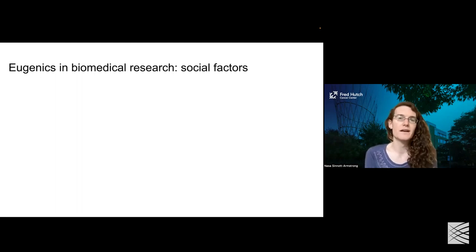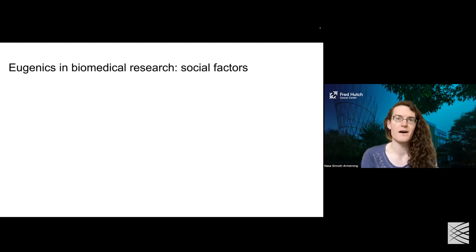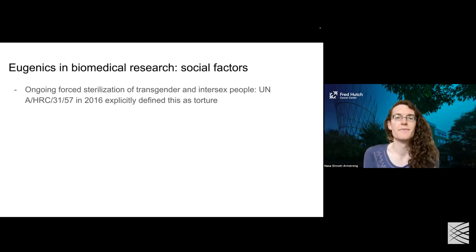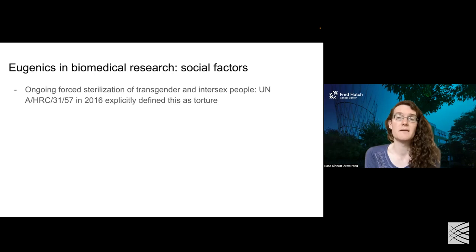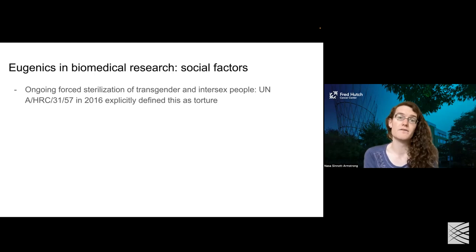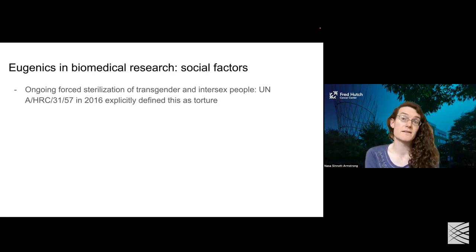It's also important to note that not only are the factors related to biology important, but there's also a number of social factors. For instance, there's ongoing sterilization of transgender and intersex people — many countries in the world and many states in the United States require individuals to undergo surgeries that render them no longer able to reproduce. In 2016, the UN explicitly defined this as torture. This is a process that is often required in order for people to socially transition.